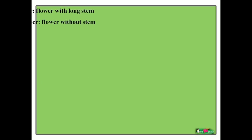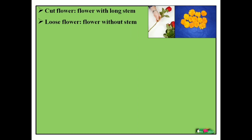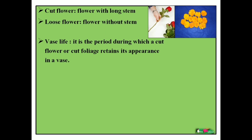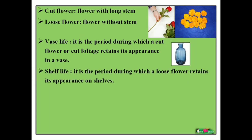What is a cut flower and a loose flower? The flower with a long stem is called the cut flower, and the flower without a stem is called the loose flower. Next, we should know about vase life and shelf life. Vase life is mostly used for cut flowers — when a cut stem with the flower is placed in a vase or container, the period of time it retains or survives is called the vase life. For shelf life, loose flowers are placed on shelves or a rigid surface, and we check how many days they retain or survive.